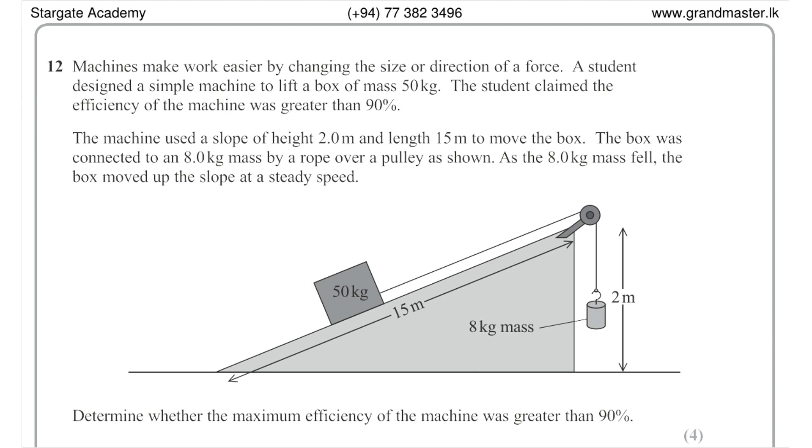The student claimed the efficiency of the machine was greater than 90%. The machine used a slope of height 2 m and length 15 m to move the box. The box was connected to an 8 kg mass by a rope over a pulley as shown.